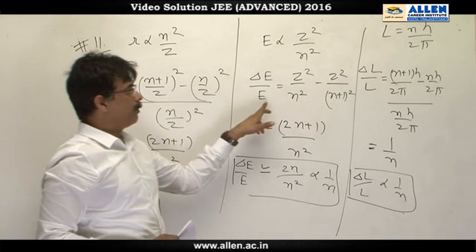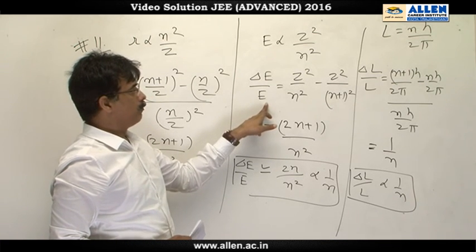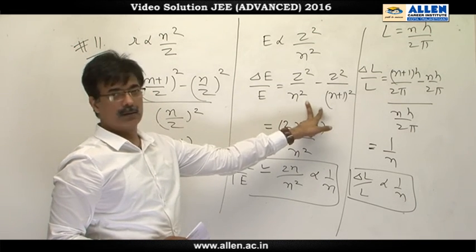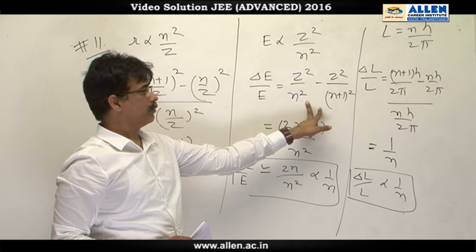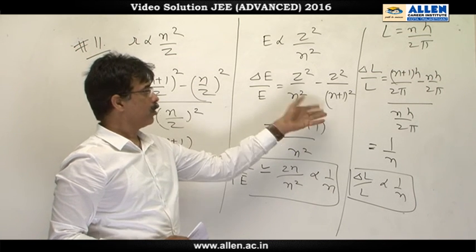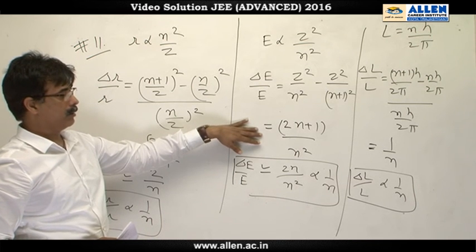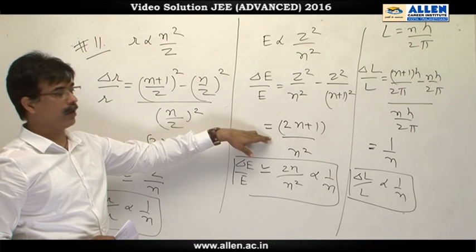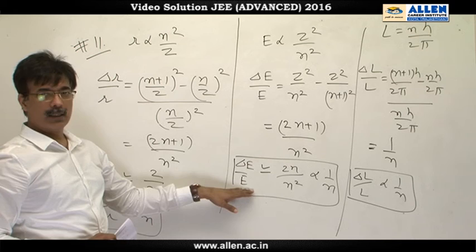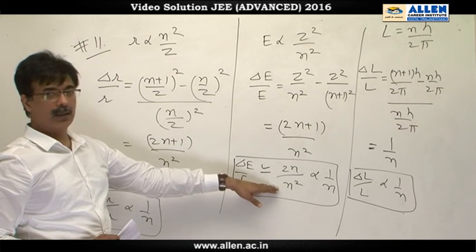Similarly, delta e by e. So we choose two consecutive orbits, and for these two, we get this expression. On solving and approximating, noting that n is given to be far greater than 1, we get delta e by e to be proportional to 1 by n cube.